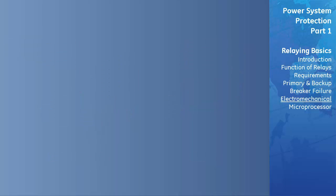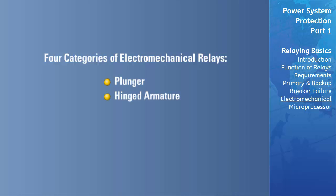Electromechanical relays fall into one of four styles or categories depending on the type of moving part. These are the plunger, the hinged armature, the induction disc, and the induction cup.